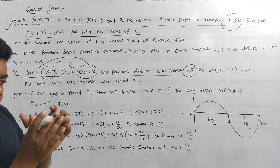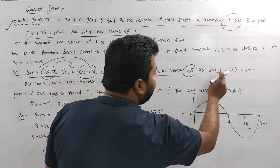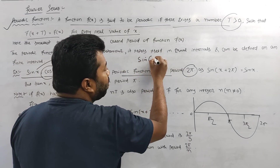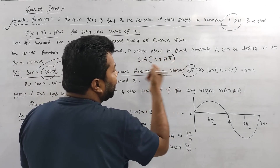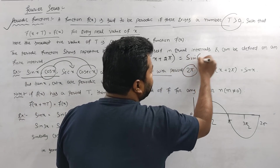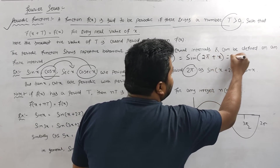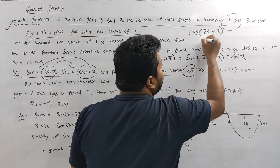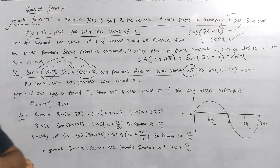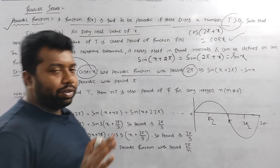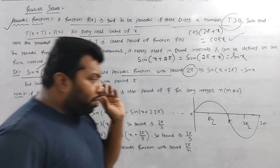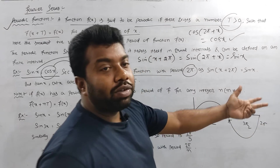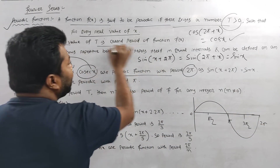Sine x, cos x, sec x, cosec x — their period is 2π. The formula: f(x + T) = f(x), where T is the period. For sine: sin(x + 2π) = sin(x). Similarly, sin(2π + θ) = sin θ. The smallest positive value T is called the period of the function.